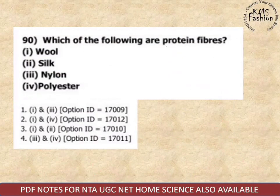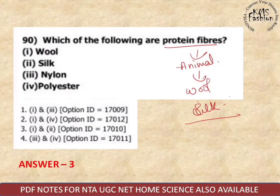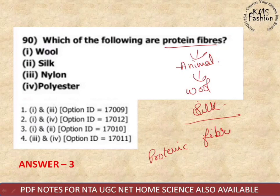Next question: which of the following are protein fibers? Protein means animal fibers. These are wool and silk — also called proteinic fibers. So the answer is first and second; eliminate the others.